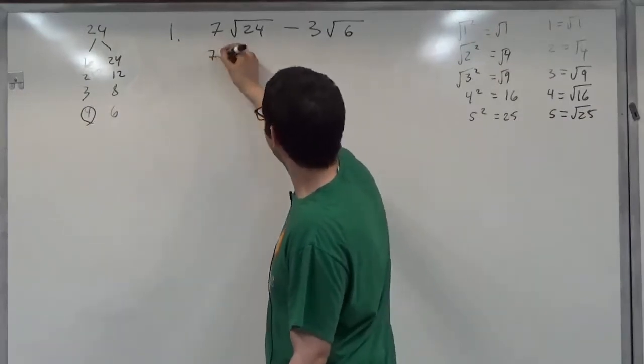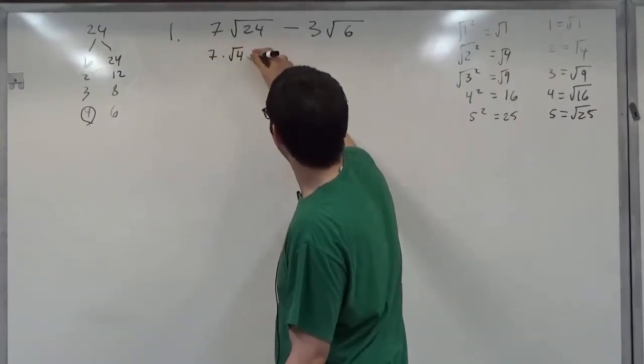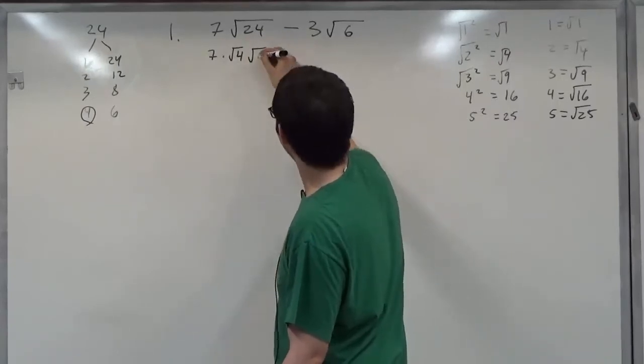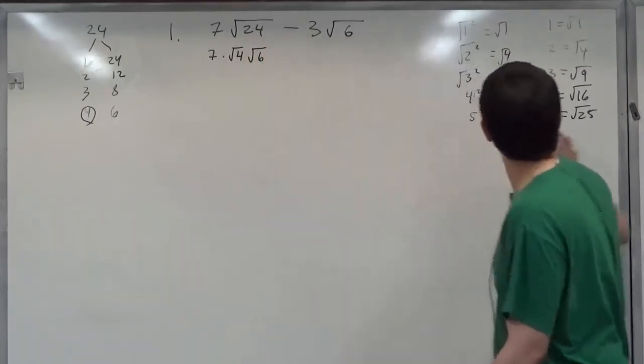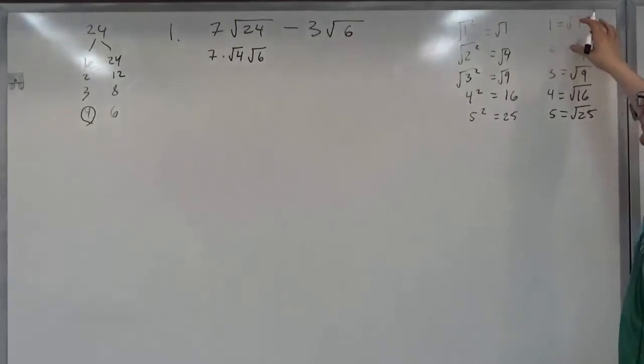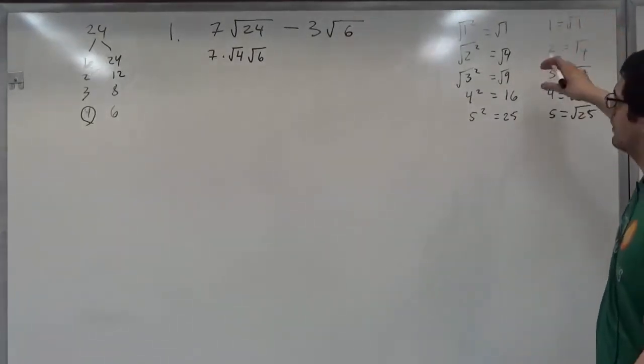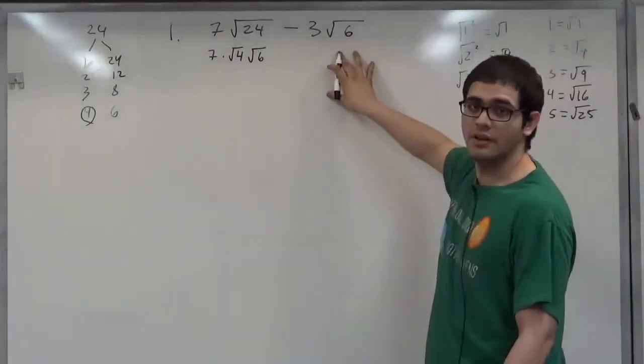So we have seven times square root of four times square root of six. Square root of six doesn't fall into one of our perfect squares, so we can leave this as it is.